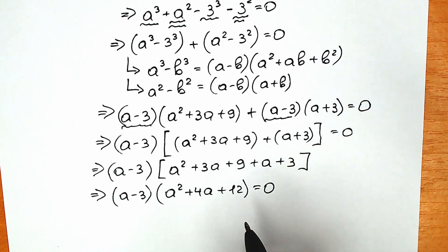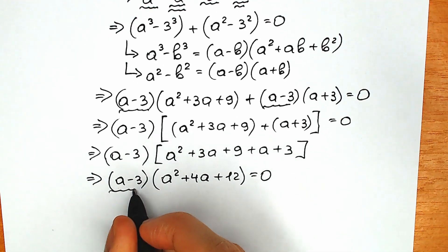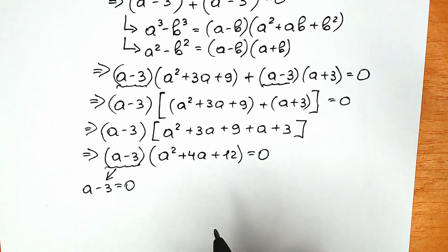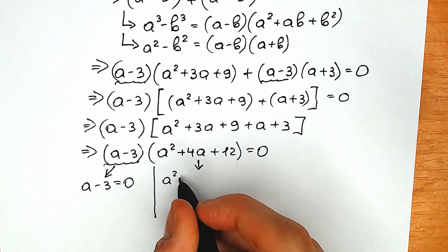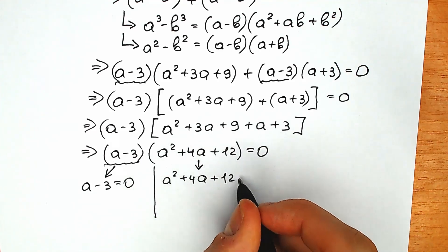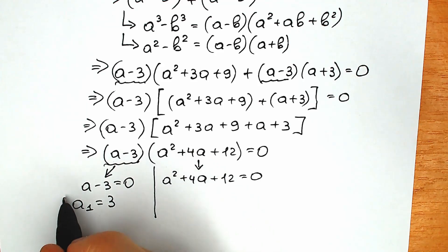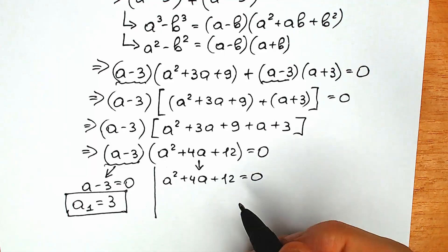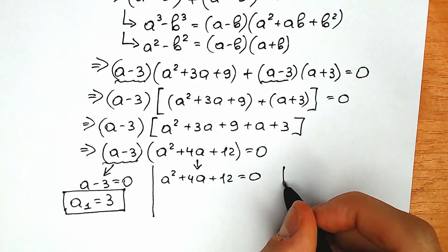Right now the greatest moment — because we have a product of two parentheses equal to 0, the first parenthesis equals 0 or the second parenthesis equals 0. So a minus 3 equals 0, which gives us our first root: a₁ equals 3. We'll verify this root a little later. Right now let's look closely at our second equation: a squared plus 4a plus 12 equals 0. This is a quadratic equation with coefficient a equal to 1, so we can easily use the discriminant formula.